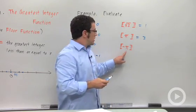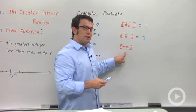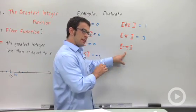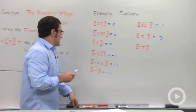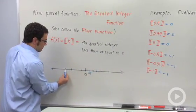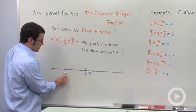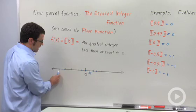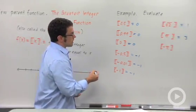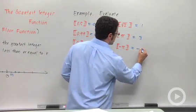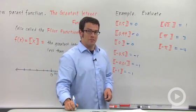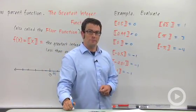And negative pi — watch out for the greatest integer when dealing with negative numbers. Remember, you're always traveling to the left on the number line. Negative pi would be past negative 3, so the greatest integer less than or equal to negative pi is actually negative 4. Next, we're going to graph this function — it is a very interesting graph.